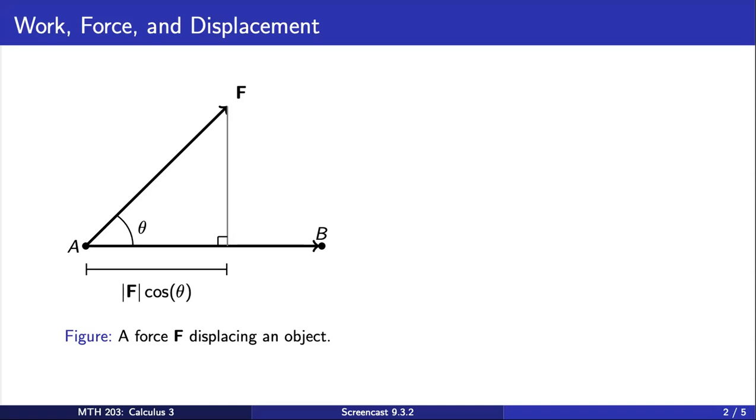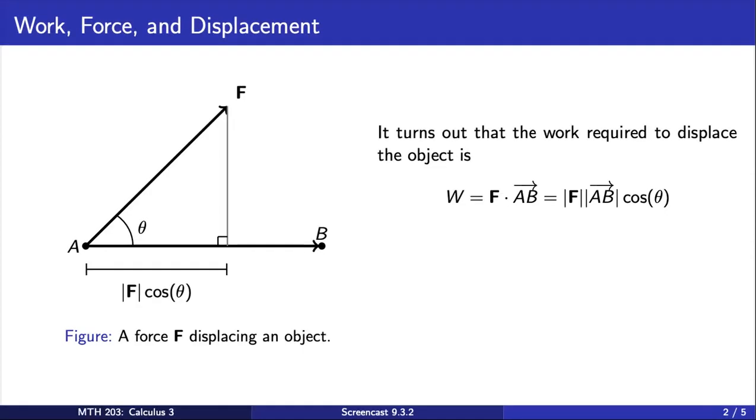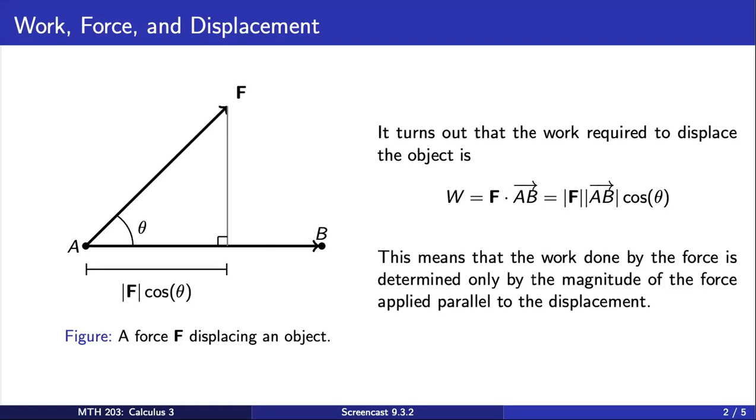Note that the force here is not necessarily parallel to the displacement of the object. In this situation, it turns out that the work required to displace the object is given by the dot product of these two vectors. And using the familiar relationship from earlier in this section, we see that the work done by the force is determined only by the magnitude of the force applied parallel to the displacement.